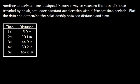Here's another problem you can try. Another experiment was designed to measure the total distance traveled by an object under constant acceleration with different time periods. Plot the data and determine the relationship between distance and time. The first thing we need to do is determine which one is the dependent variable and which one is the independent variable. In this experiment, we wish to measure the total distance — that is the dependent variable. So that's y.